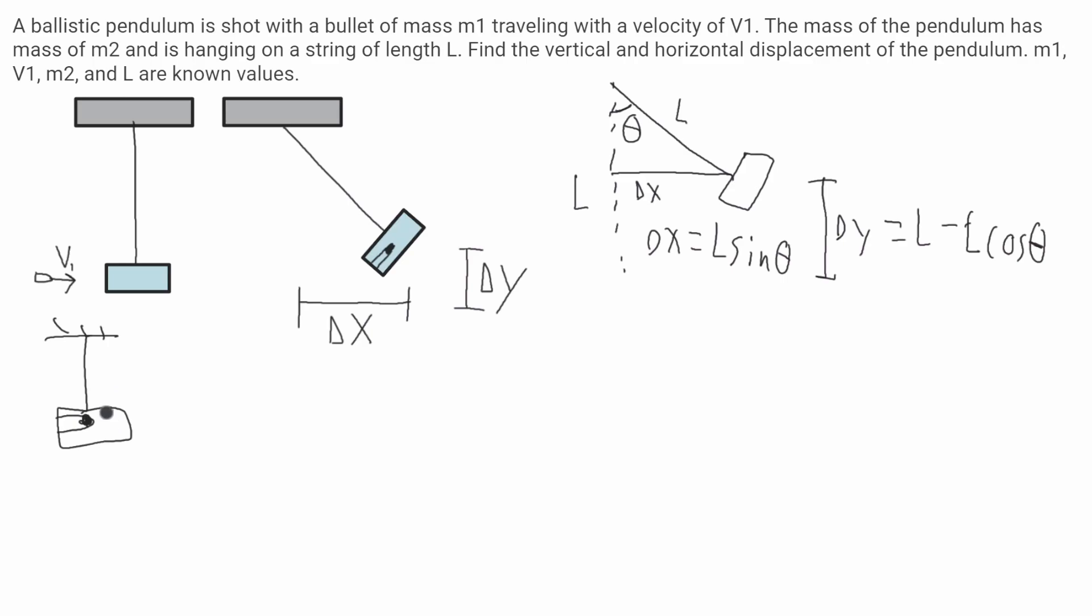Since we're ignoring air resistance, all I need to do is find the velocity I'll call v2 at this point. So I'll use conservation of momentum. The momentum before is just the momentum of this bullet.